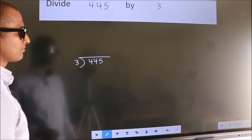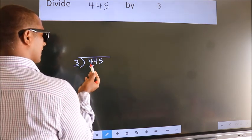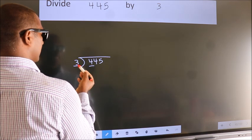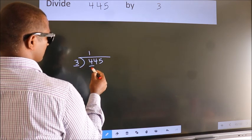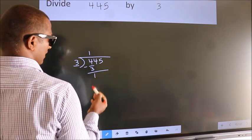Next, here we have 4, here 3. A number close to 4 in the 3 table is 3 times 1 equals 3. Now we should subtract. We get 1.